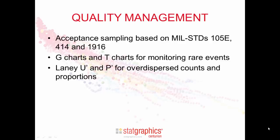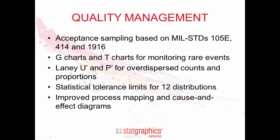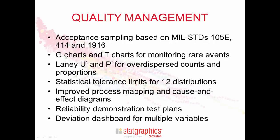We've added Laney U-prime and P-prime control charts for over-dispersed counts and proportions. The statistical tolerance limits procedure now computes two-sided limits and one-sided bounds for 12 different probability distributions. We've improved the process mapping and cause and effect diagrams. We've added reliability demonstration test plans for life data. We've also included a deviation dashboard for monitoring multiple variables.